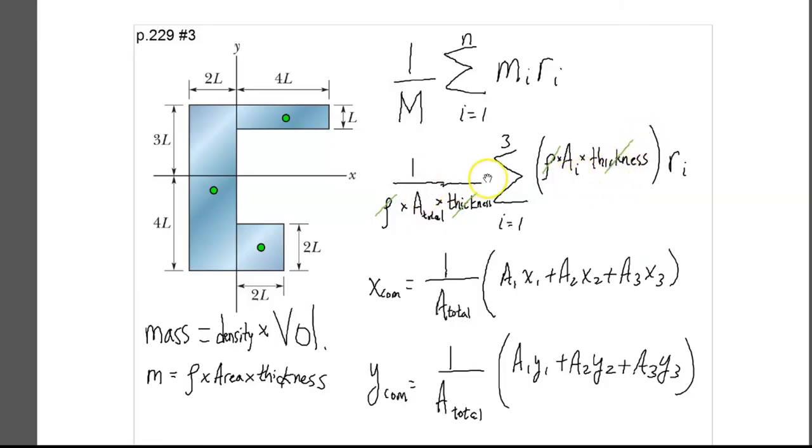And so the thickness cancels, the density cancels, and we see that, in other words, the ratio of the area of the piece to the total area is the same ratio as the mass of that piece to the total mass. So that's the key idea here is that we can get by without knowing the actual mass because the ratios of the area to the total area is the same as the ratio of the mass to the total mass.